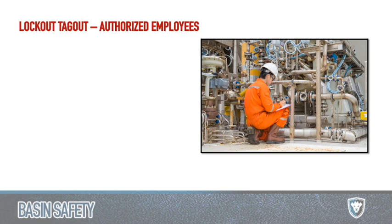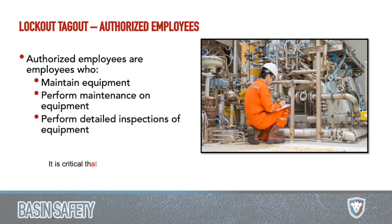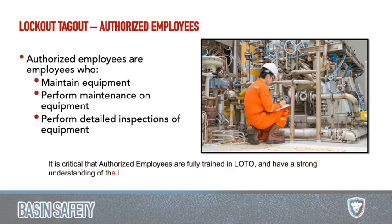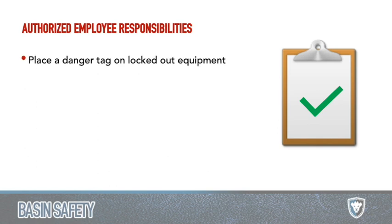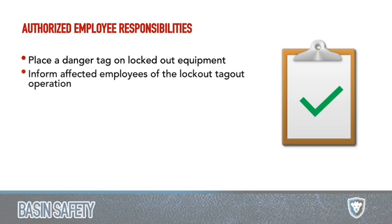Getting into employee responsibilities and different types of employees: an authorized employee is someone who can maintain equipment, perform maintenance, and do detailed inspections. They need to be specifically trained as an authorized employee — even if our authorized employee was a DOT mechanic, we still need to train him specifically on our equipment. Their responsibilities are to place the lock and tag, communicate with other workers during maintenance, repair the equipment, and remove locks when the job is completed.